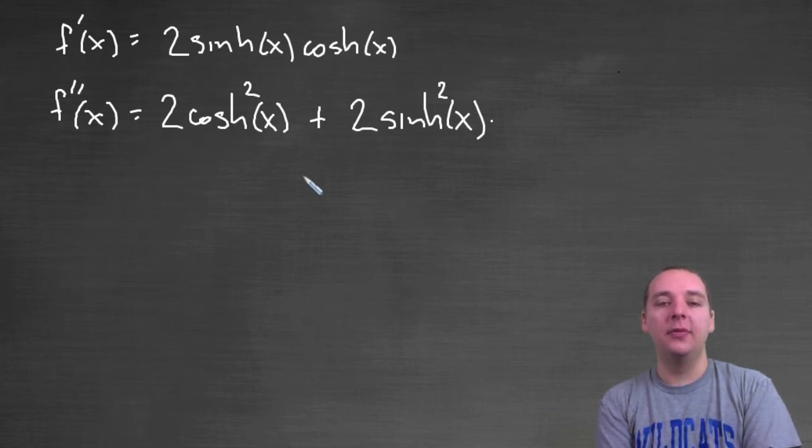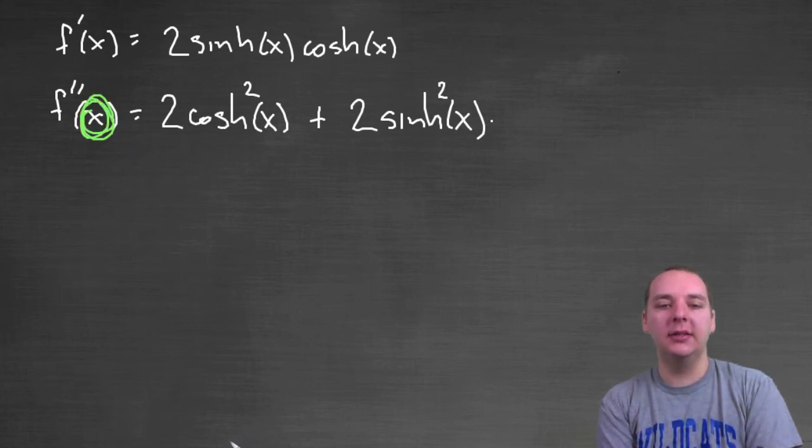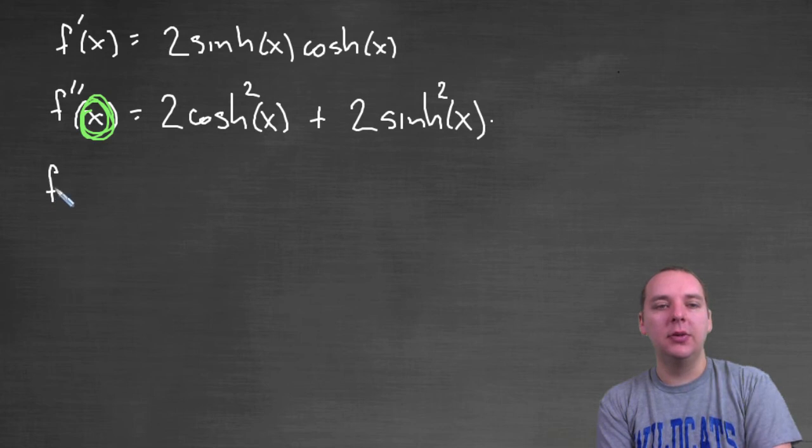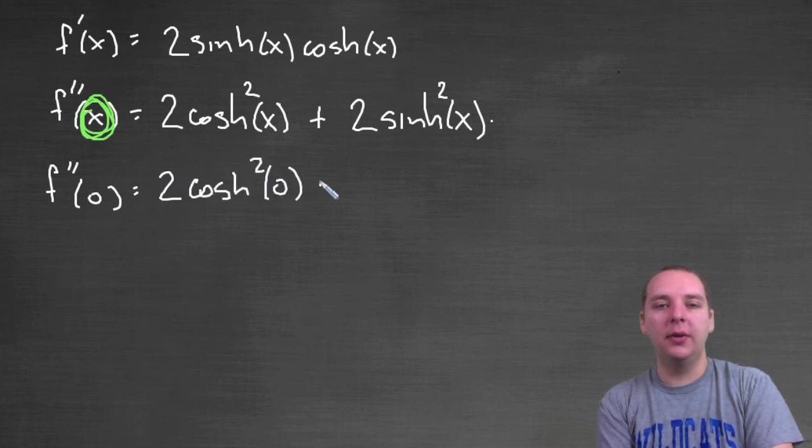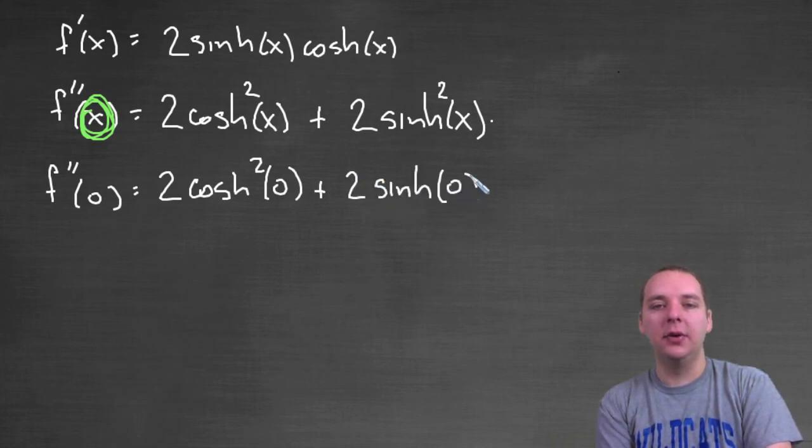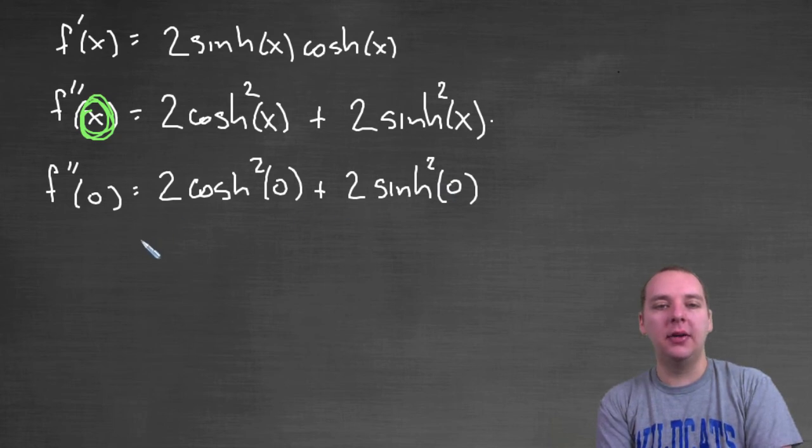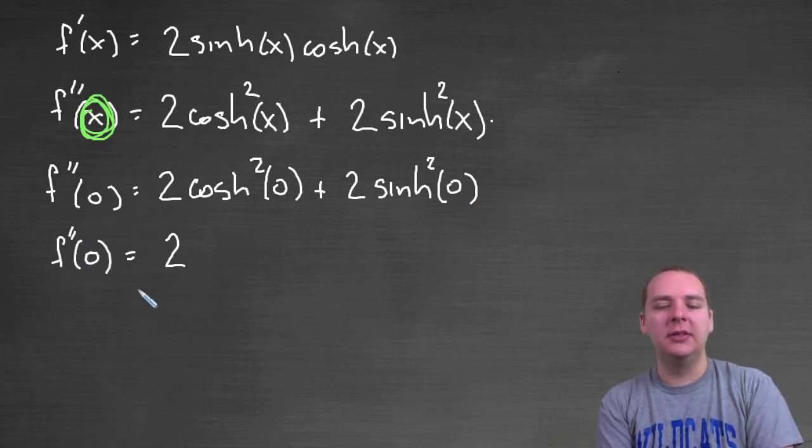This is the second derivative, and for the second derivative test, all we really have to do is plug in our critical value for x and see what we get. F double prime at zero would make two hyperbolic cosine of zero squared, plus two hyperbolic sine of zero squared. Hyperbolic cosine of zero is one, one squared is one, one times two is two. Hyperbolic sine of zero is zero, and so it looks like our second derivative is two.